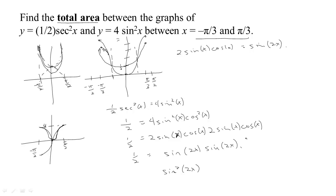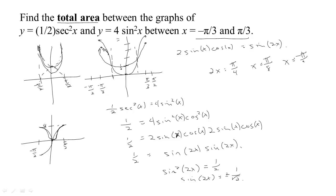That means sin(2x) = ±1/√2. We recognize that if 2x = π/4, then x = π/8, and sin(π/4) = 1/√2. Also x = -π/8 works because 2(-π/8) = -π/4 and sin(-π/4) = -1/√2. So the two crossing points are at x = π/8 and x = -π/8.